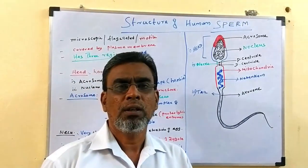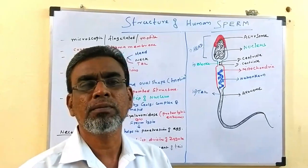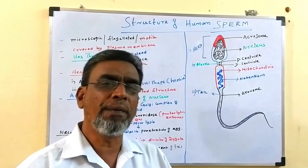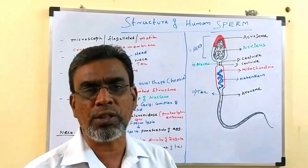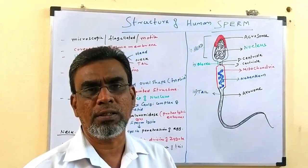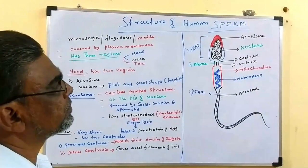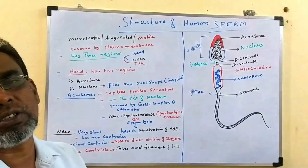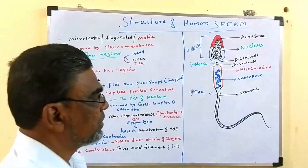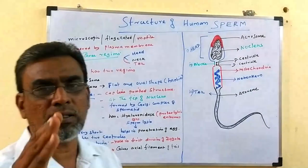What are the differences? The female gamete is non-motile, whereas the male gamete is motile. So many other differences are there in their structure and also function. It is quite interesting. Now we will see the detailed structure of human sperm. This is also microscopic, like the female gamete. It is also flagellated — a flagella-like tail structure is there. It is a flagellated and motile gamete.